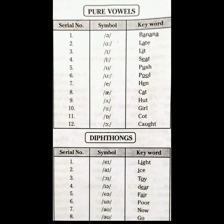Next, come to the diphthongs. Here, the symbols are given in second column. Those are also sounds. Diphthongs mean two vowel sounds. Light, ice, toy, dear, fair, for, now, go.